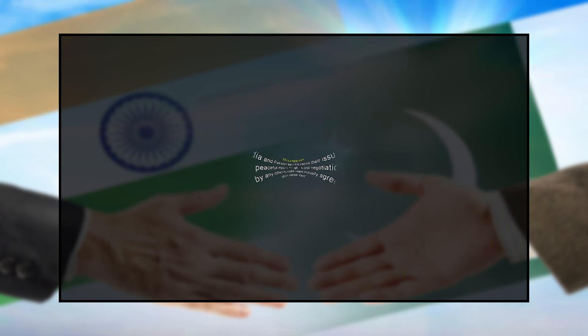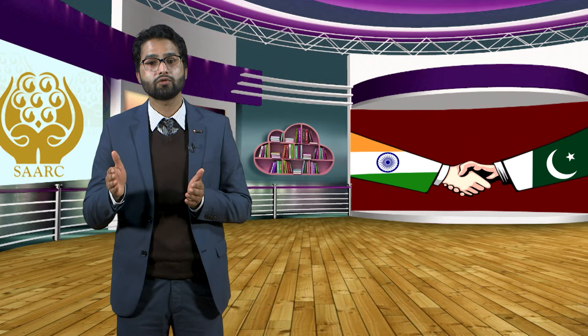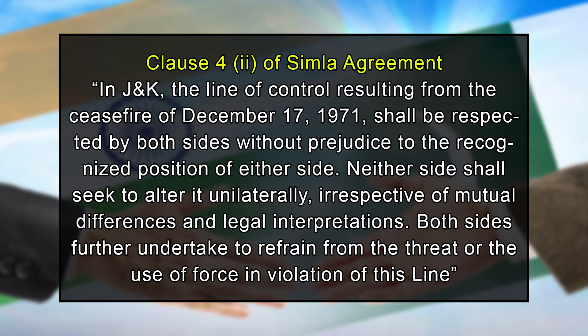Under the Shimla Agreement, India and Pakistan agreed to resolve their issues 'by peaceful means through bilateral negotiations or by any other peaceful means mutually agreed upon between them.' Furthermore, they agreed to convert the ceasefire line in Jammu and Kashmir to a Line of Control as a de facto border. Clause 4, subsection 2 of the agreement stated: 'In Jammu and Kashmir, the line of control resulting from the ceasefire of December 17, 1971 shall be respected by both sides without prejudice to the recognized position of either side. Neither side shall seek to alter it unilaterally, irrespective of mutual differences and legal interpretations. Both sides further undertake to refrain from the threat or the use of force in violation of this line.'